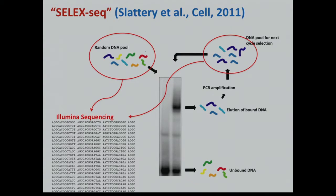Over the last years, we've been working a lot with a type of SELEX data — we call it SELEX-seq — which uses EMSA gels, different from solution-based measurements such as in HT-SELEX, in that you can isolate complexes of, say, heterodimer transcription factors binding to DNA. You start with a random pool, sequence that, then cut out the bound DNA from the EMSA gel after a round of selection. You can iterate this, but you can also do just one round. Then you sequence the selected pool as well, and from the statistical differences between those two pools, you can do motif discovery.